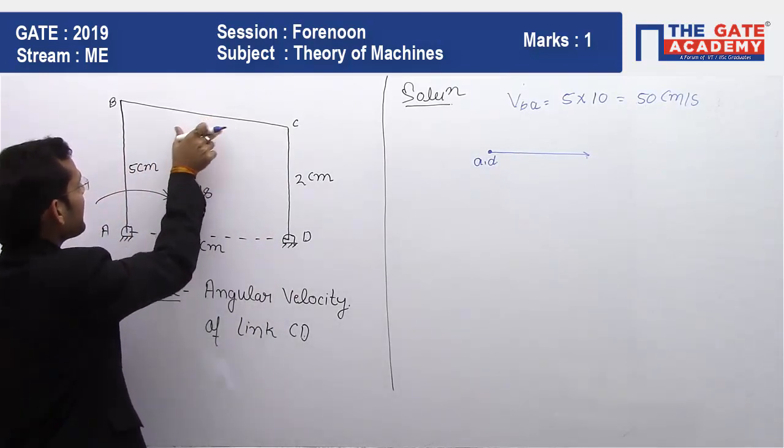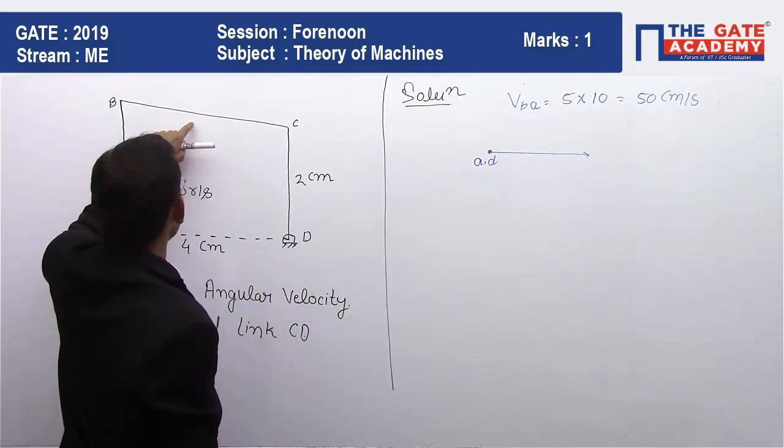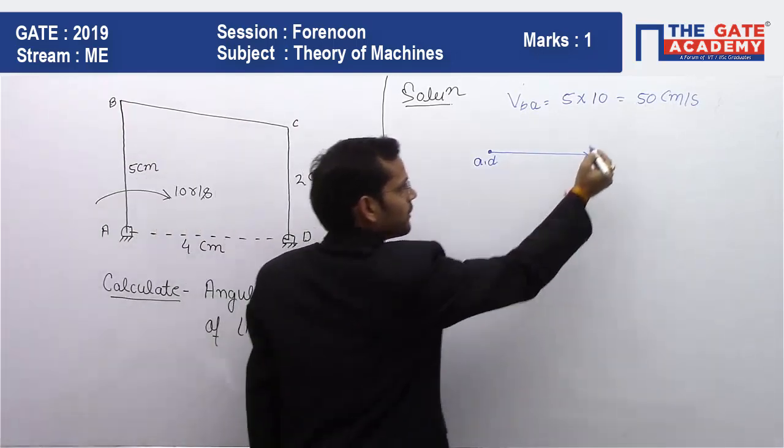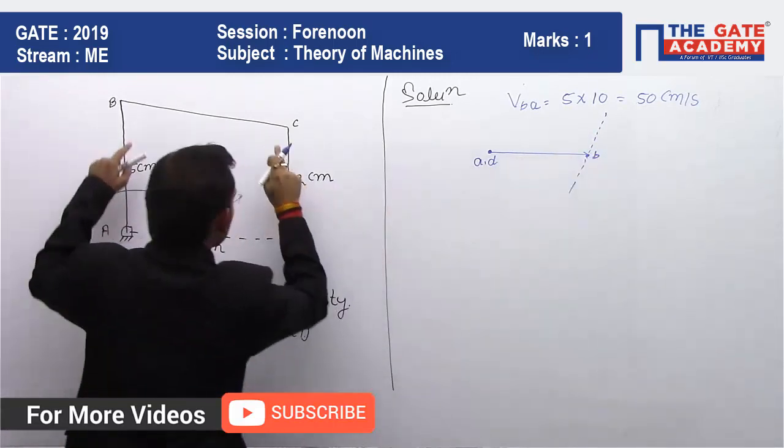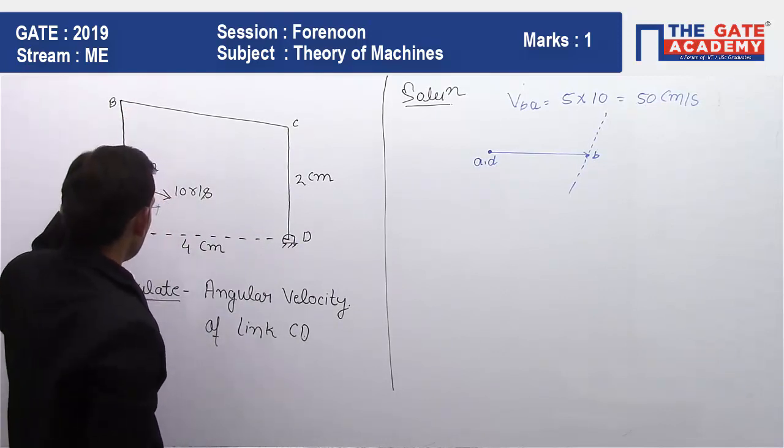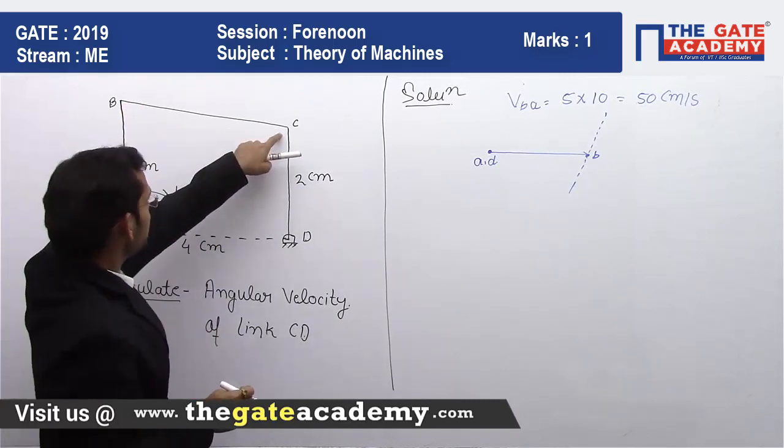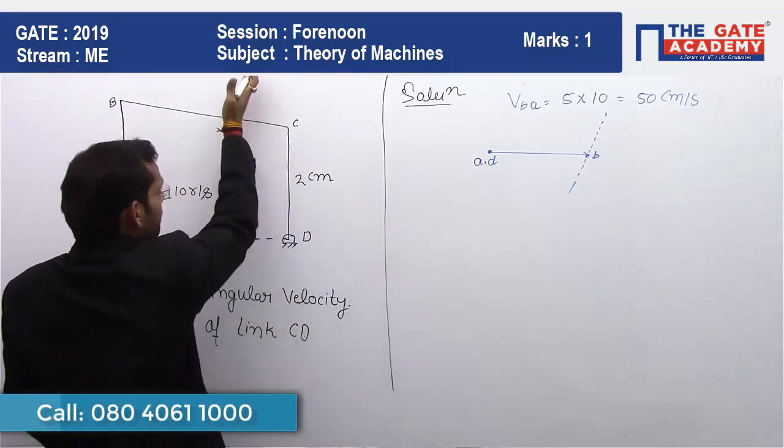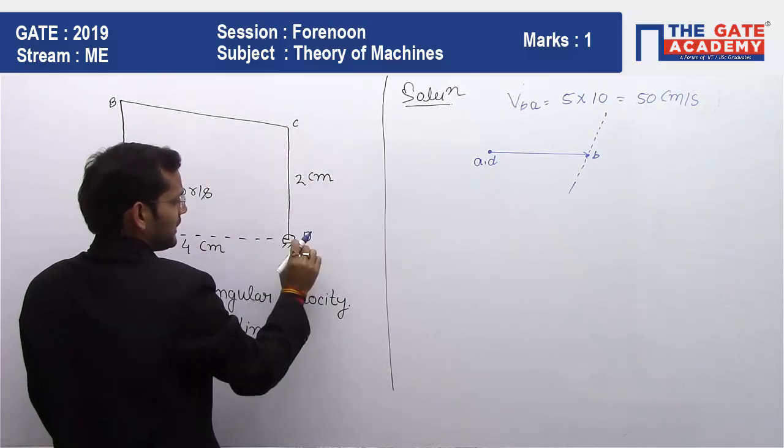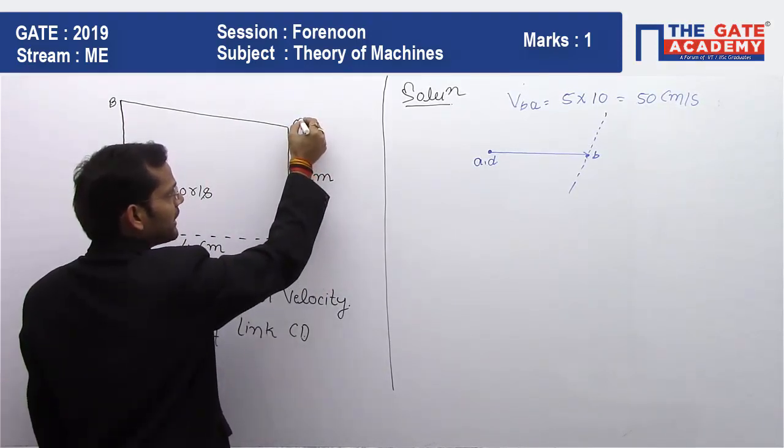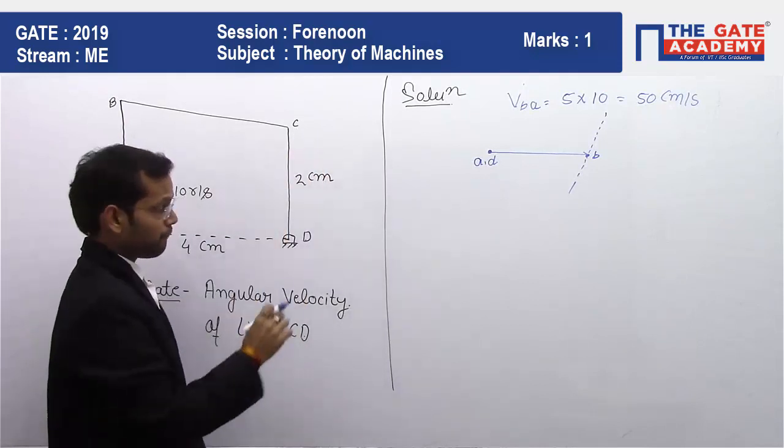We don't have any data regarding the BC link, but we know that the velocity of this link will be perpendicular to the link. So we draw the perpendicular at point B because this BC link is rotating about point B, exactly similarly as B is rotating about A. Here C is rotating about B, so we will draw perpendicular at point B.